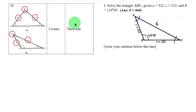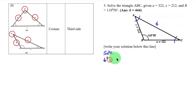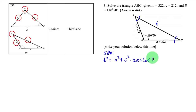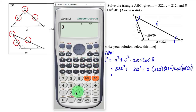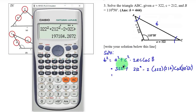Since the unknown side is side b, we write: b squared equal to a squared plus c squared minus 2ac cosine of angle B. Substituting the given values: 322 squared plus 212 squared minus 2 times 322 times 212 times cosine of 110 degrees 50 minutes.